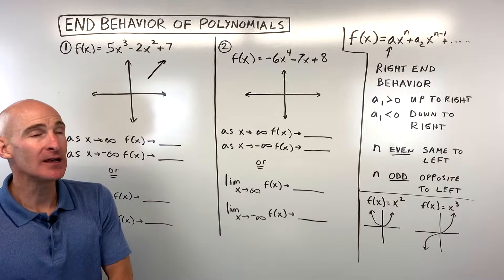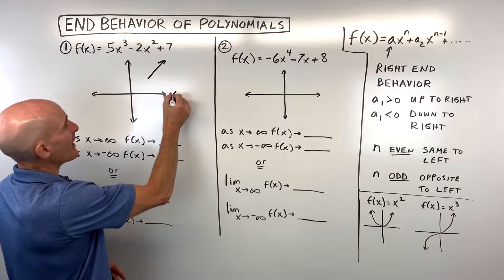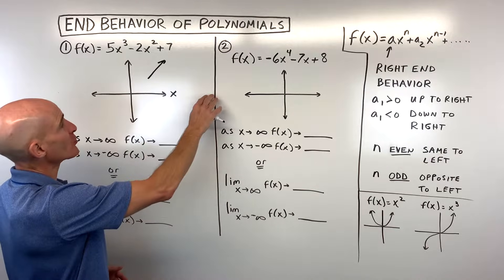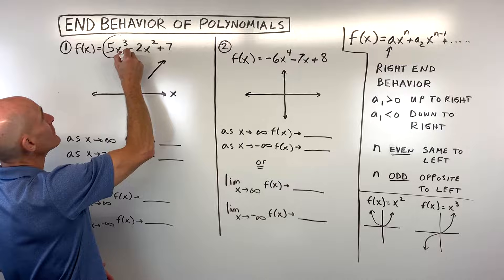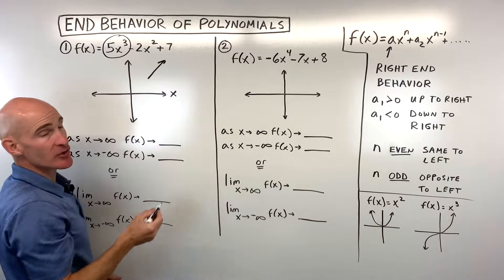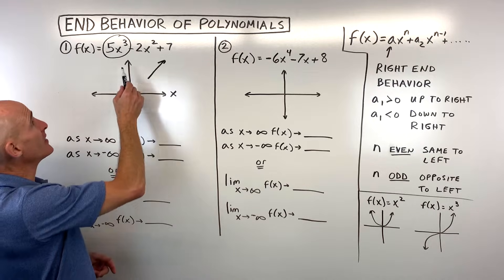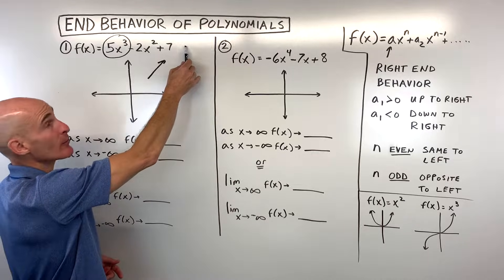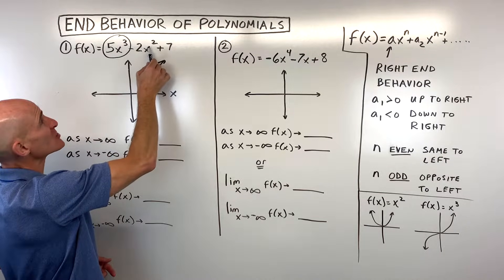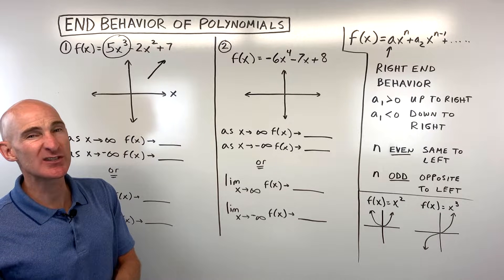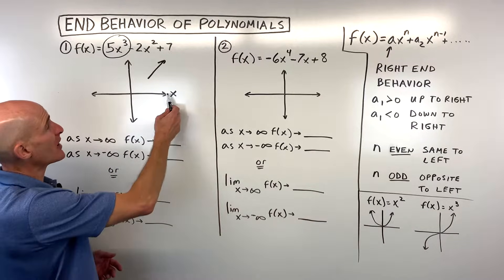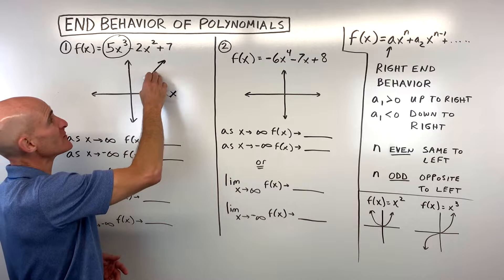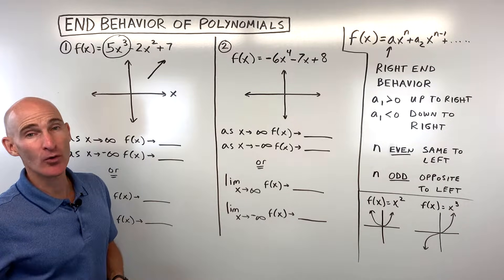Why does the leading coefficient determine right-end behavior? As x gets larger — say 10, 100, or 1,000 — the leading term grows much faster than the others. For example, if x equals 10: 10 cubed is 1,000 times 5 is 5,000, which is quite large. Even putting 10 into the other terms gives only minus 200 and plus 7 — much smaller. Try x equals 1,000 and you'll see the leading term is by far the most influential. That's why a positive leading coefficient means up to the right, and a negative one means down to the right.